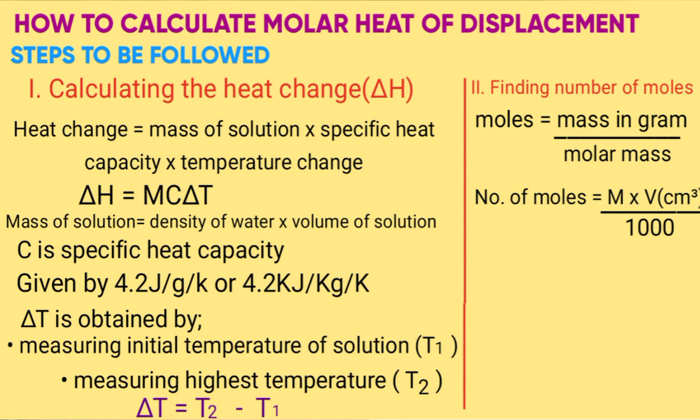If the mole ratio is one to one, then we use the smaller number of moles because the bigger number of moles will be in excess.